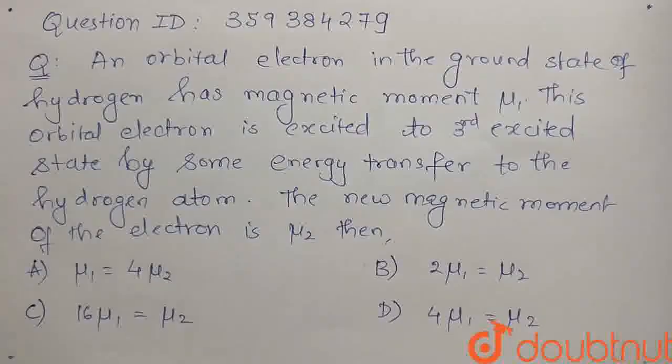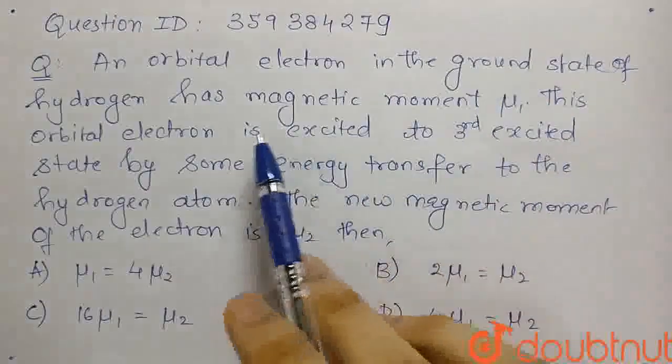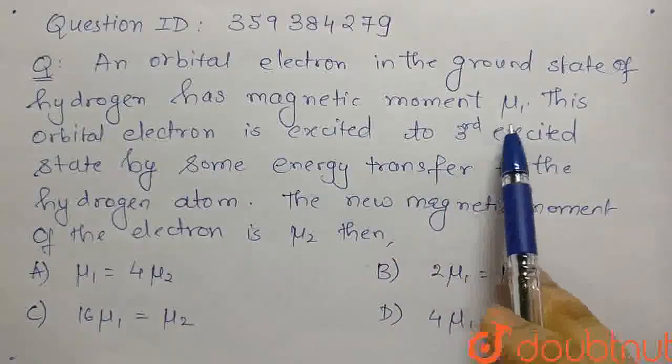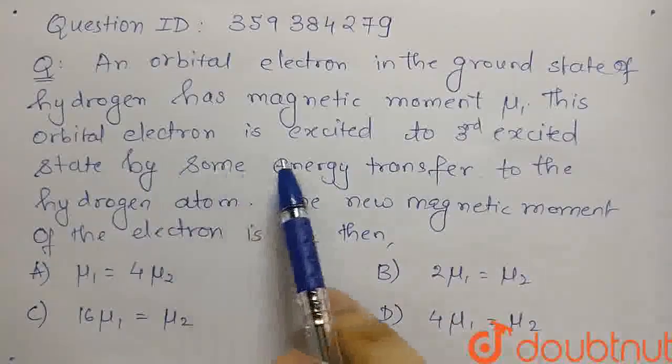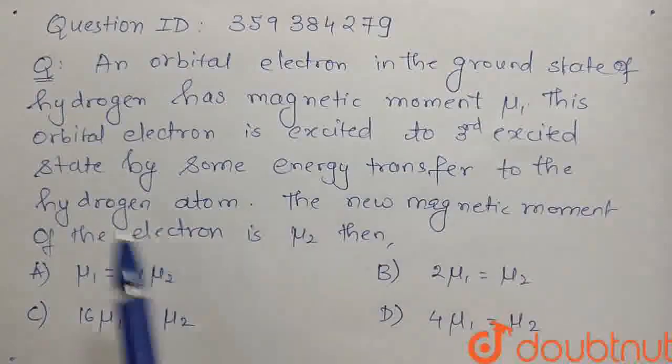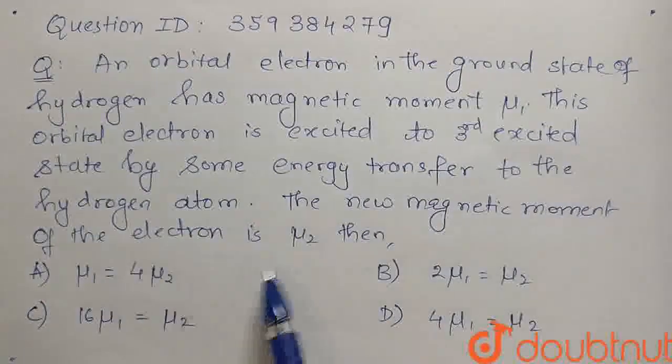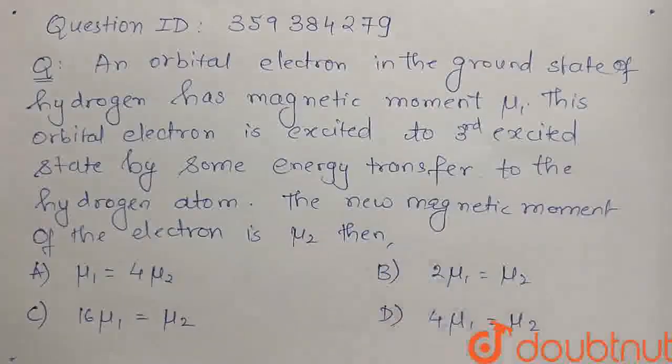Hello students, we have a question given to you. An orbital electron in the ground state of hydrogen has a magnetic moment mu1. This orbital electron is excited to third excited state by some energy transfer to the hydrogen atom. The new magnetic moment of the electron is mu2, then, okay?